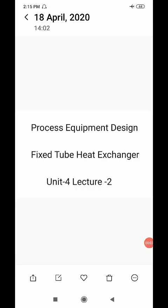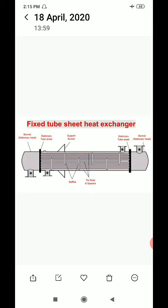Unit 4 Lecture 2: Fixed Tube Heat Exchanger from Process Equipment Design. Here we can see the block diagram of a fixed tube heat exchanger. A fixed tube heat exchanger is almost a common type of heat exchanger that is generally used in industry.